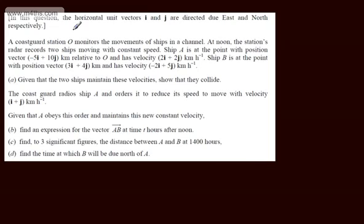In this question, we're told that Coast Guard Station O monitors the movements of ships in a channel. At noon, the station's radar records two ships moving with constant speed. Ship A is at the point with position vector -5i + 10j kilometres relative to O and has velocity 2i + 2j km/h. Ship B is at position vector 3i + 4j kilometres and has velocity -2i + 5j km/h. In part A, given that the two ships maintain these velocities, we need to show that they collide.